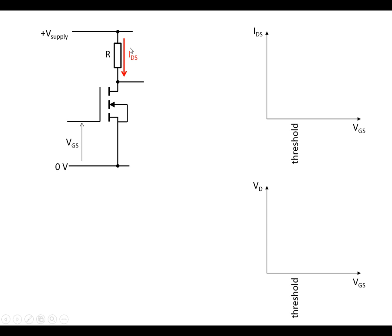The voltage at the gate is going to control the current through the drain and the source, so the current going through this resistor. If the voltage across the gate and the source is less than the threshold, we're going to get no current flowing through this resistor. Because the voltage at the drain is the supply voltage minus the voltage across this resistor, and that voltage is I times R — which is going to be 0 — we end up with the supply voltage. So if VGS is below the threshold, the voltage at the drain will be the supply voltage.